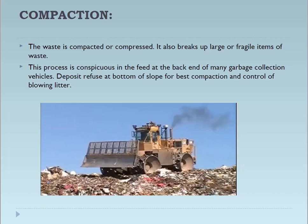Next is compaction. The waste is compacted or compressed and also broken up into large or fragile items. This process is conspicuous at the back end of many garbage collection vehicles. The refuse is deposited at the bottom of a slope for the best compaction and control of blowing litter.